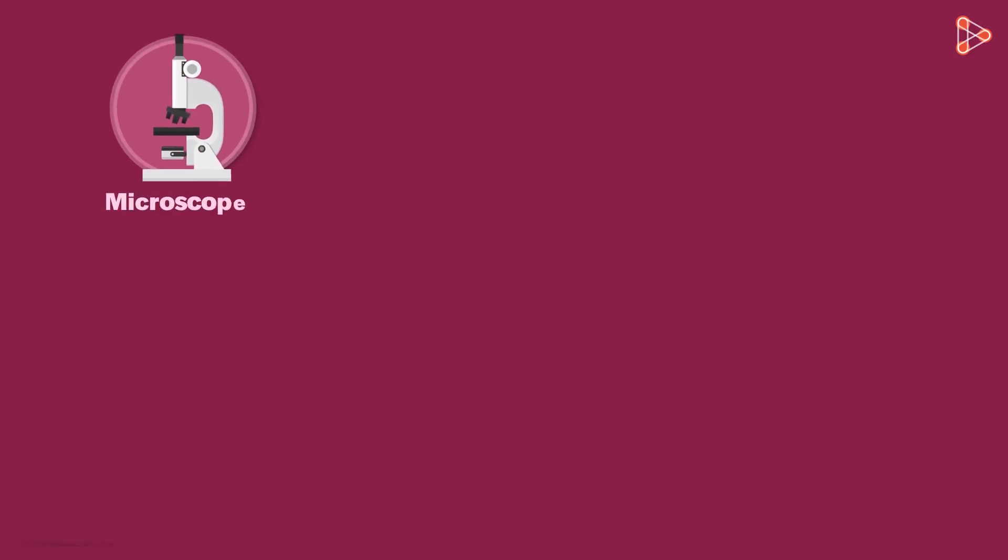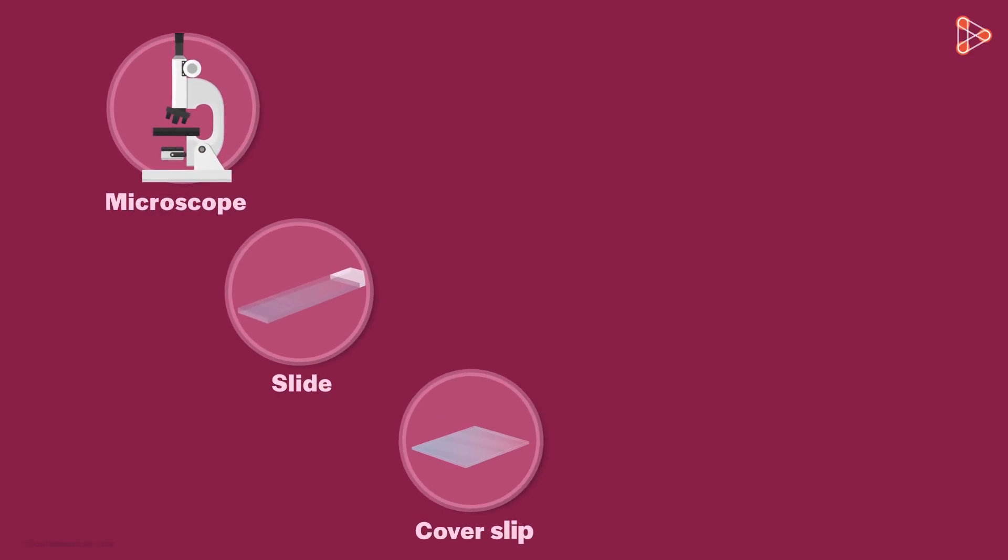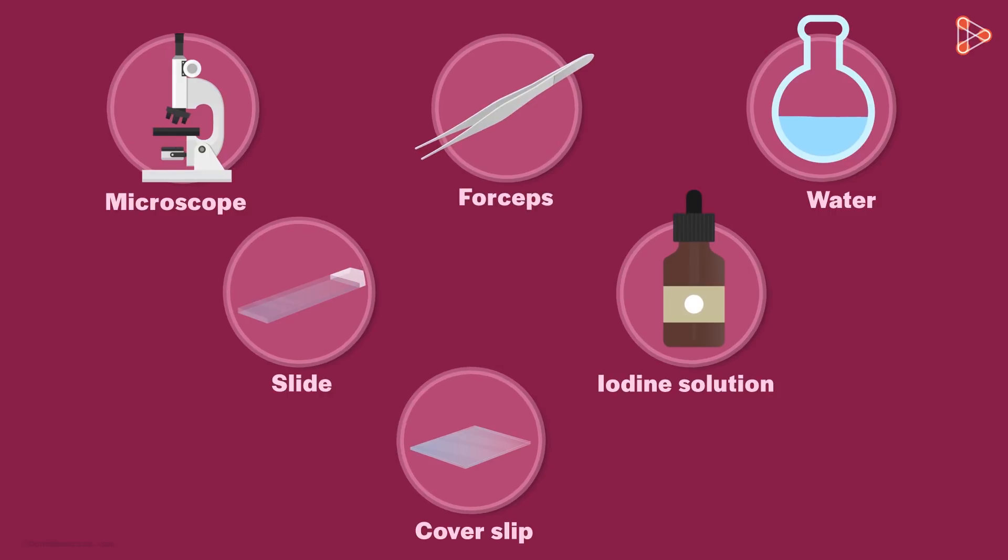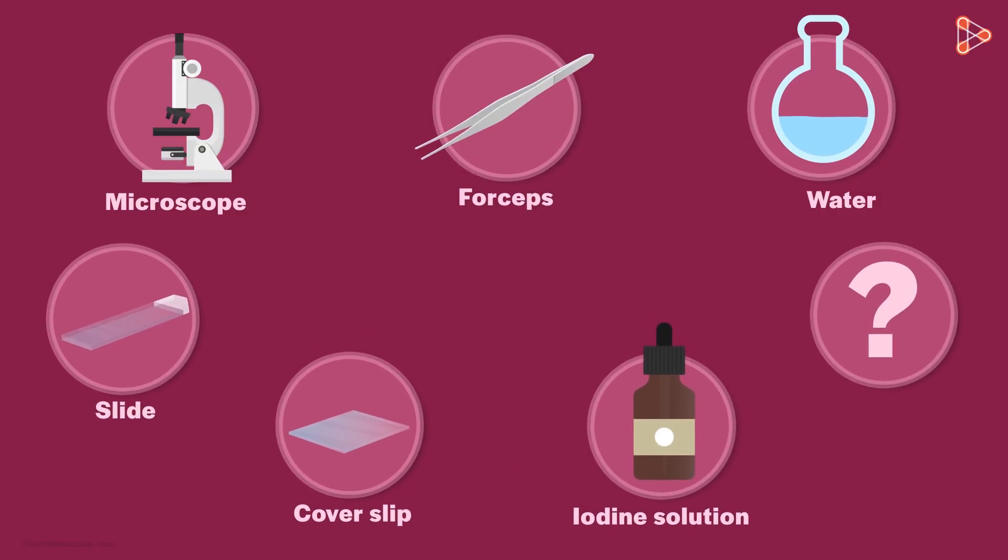We will need a microscope, a slide, a cover slip, iodine solution, water and forceps. Anything else we are left with? Well, the most important of all is the specimen, that is an onion peel.